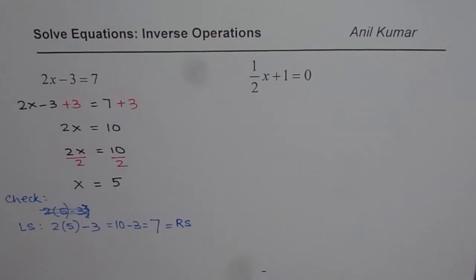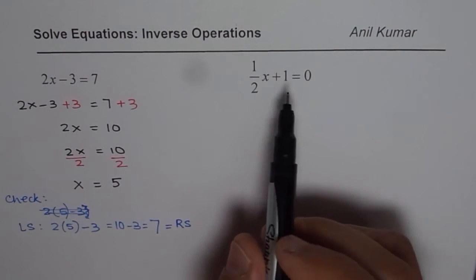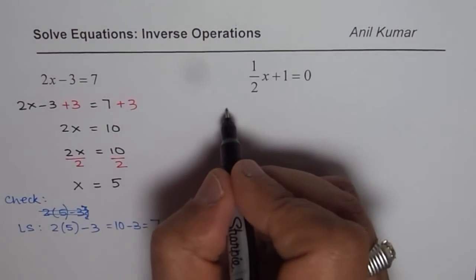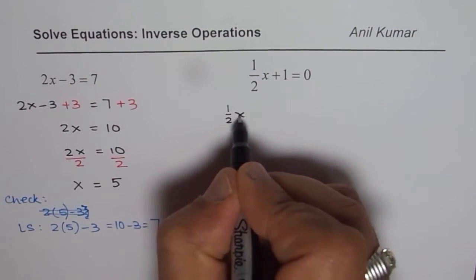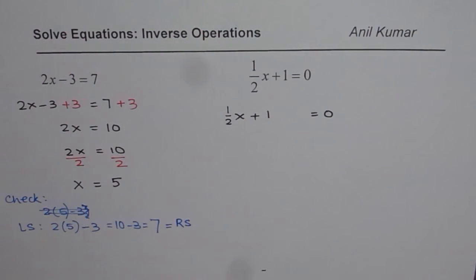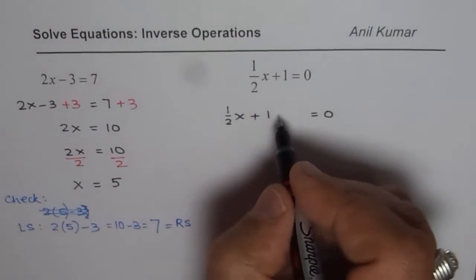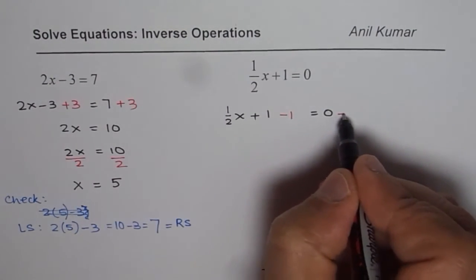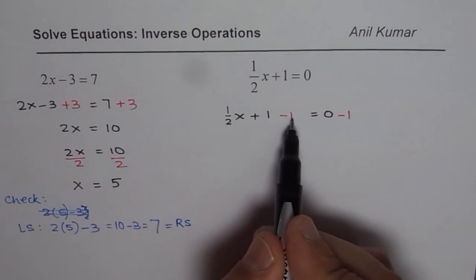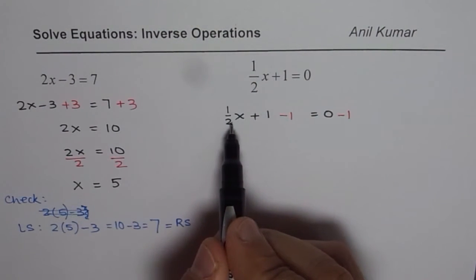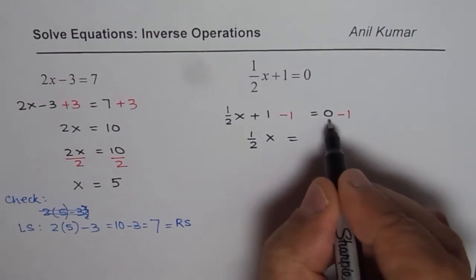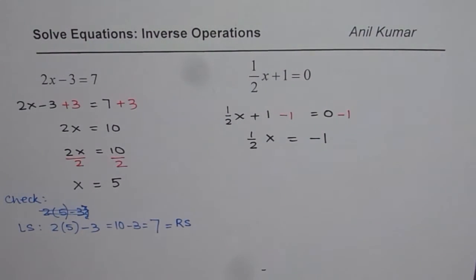Let us follow these steps once again and solve the second equation which is half x plus 1. So we will begin with the equation itself which is half x plus 1 equals 0. We have to get rid of 1. So that means take away 1 from both sides. Minus 1 minus 1. Now when you do plus 1 minus 1 you get 0. You are left with half x on the left side. So half of x equals 0 minus 1 is minus 1.